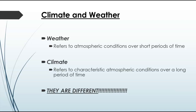A lot of times people say, well, they got a huge snowfall in Flagstaff the other day, so obviously we're not having global warming. But that's a weather event and really not a climate indicator. The other thing I should probably mention is you'll probably hear the terms climate change and global warming — both of those can be used to describe what's going on with our planet currently.